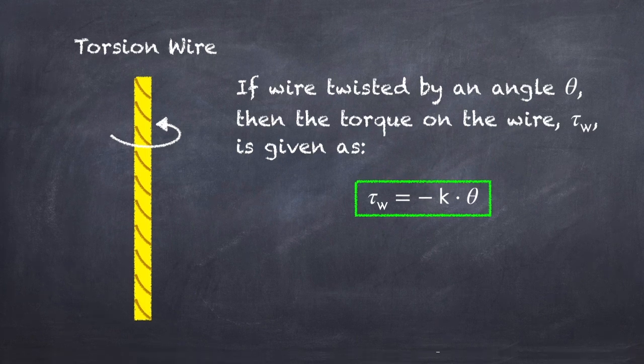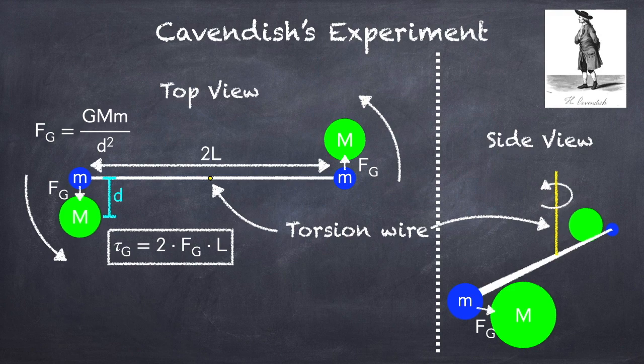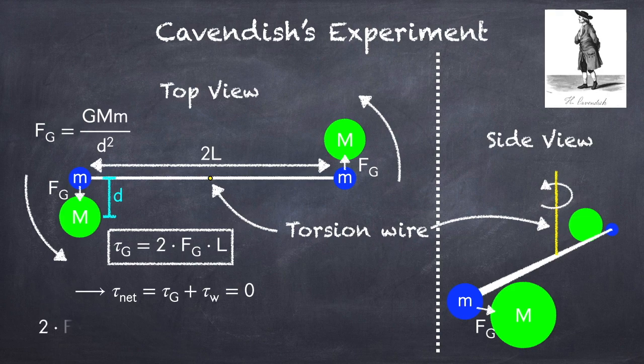So going back to Cavendish's experiment, what's going to happen? The force of gravity is causing a torque that's trying to rotate this bar. But the wire doesn't want to rotate, so it's resisting it. So what's going to happen is the force of gravity is going to try to rotate this bar, and the resistance in the wire is going to try to undo that rotation, and at some point, the torque due to the gravitational force is going to equal the torque in the wire, and the whole thing's going to stop. And so at this point, the net torque, which is just the torque from gravity plus the torque in the wire, is equal to zero. So we can plug in our expressions for the two torques, and now all we have to do is measure how much it rotated, meaning we've got to measure this angle theta.